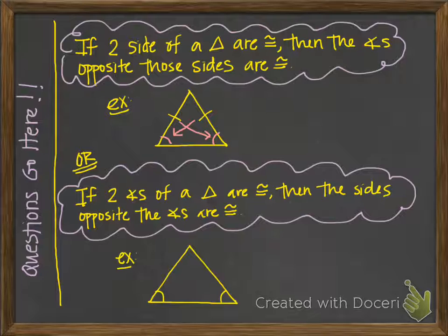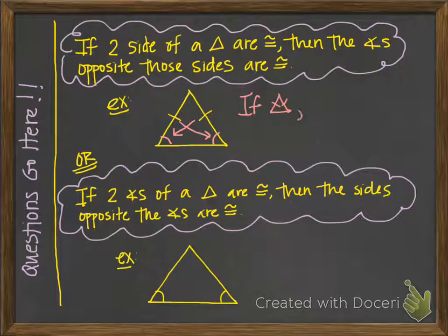Rather than writing out this theorem in full in a proof, you are welcome to abbreviate it. If two sides are congruent, then the two opposite angles are congruent. You are welcome to write it just like that in a proof — this abbreviated form would be fine.